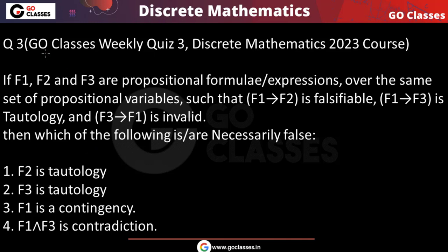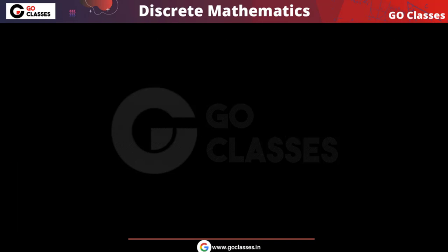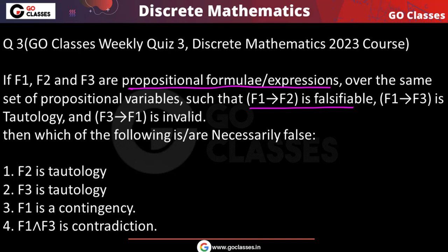Hello everyone, let's solve this question. This is GoClass's weekly quiz 3, discrete mathematics question from propositional logic. If F1, F2, F3 are propositional formulas over the same set of propositional variables, such that F1 implies F2 is falsifiable, F1 implies F3 is tautology, and F3 implies F1 is invalid. First of all, let me tell you what is falsifiable.